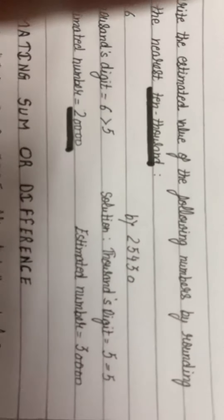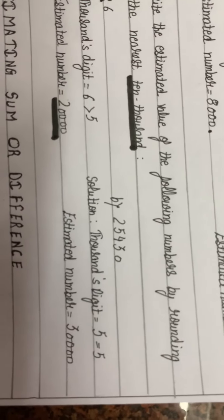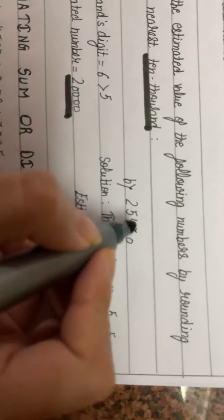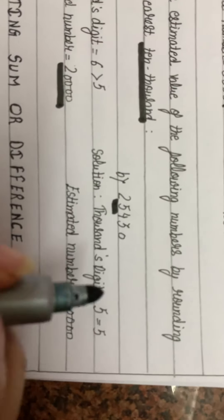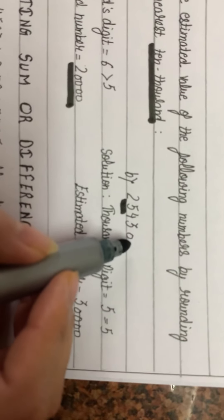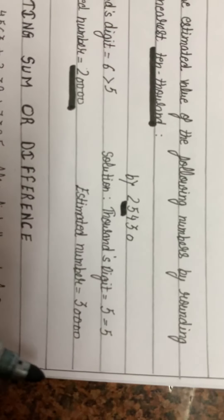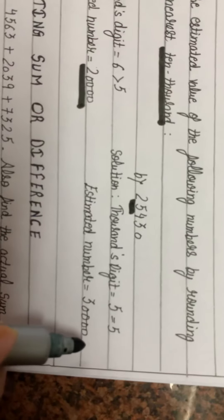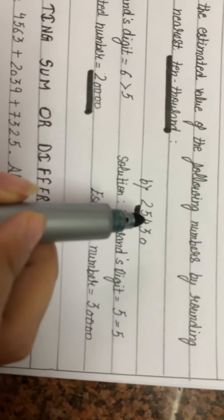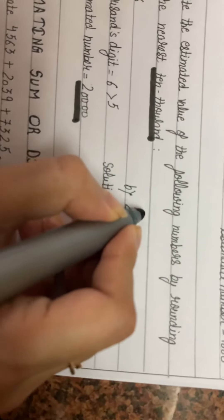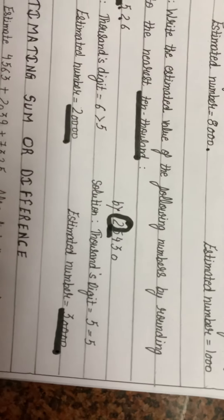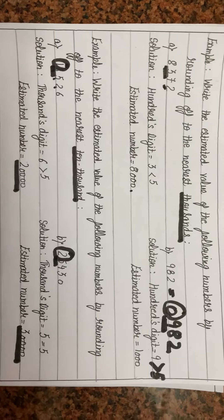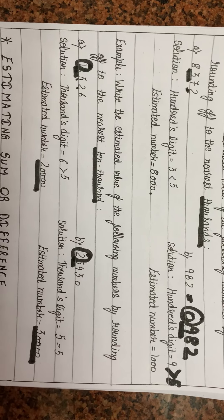Now consider 25,430. The digit at thousands place is 5, which is equal to 5, so step 3 is followed. All digits to the right are replaced by 0, and the ten-thousands digit 2 is increased by 1. So the estimated value becomes 30,000. This covers rounding off to the nearest ten, hundred, thousand, and ten thousand.